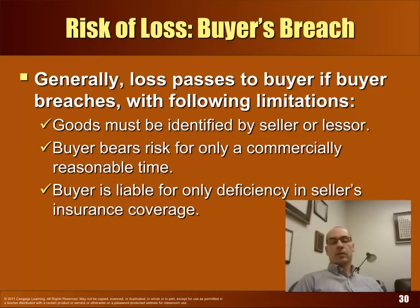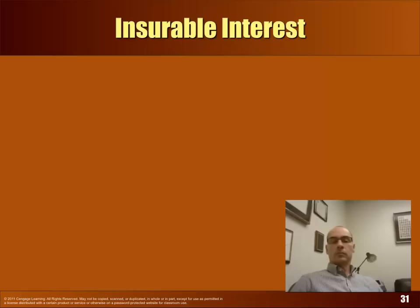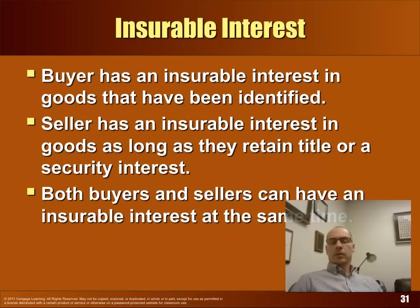Risk of loss when there's buyer's breach: generally, the loss passes to the buyer if the buyer breaches. As a general rule — if the seller breaches, they have the risk of loss; if the buyer breaches, they have the risk of loss. Limitations: the goods must be identified by the seller; the buyer bears risk for only a commercially reasonable period of time if they breach; and the buyer is liable for only the deficiency in the seller's insurance coverage. Insurable interest: we have an insurable interest in goods when we would suffer a loss. A buyer has an insurable interest after the goods are identified. The seller has an insurable interest as long as they retain title or a security interest. Both buyer and seller can have an insurable interest in the same goods at the same time.